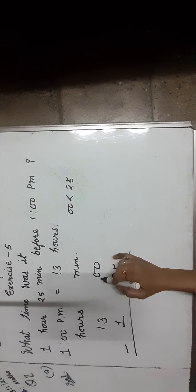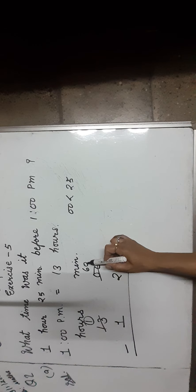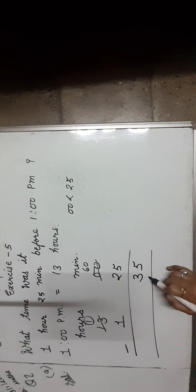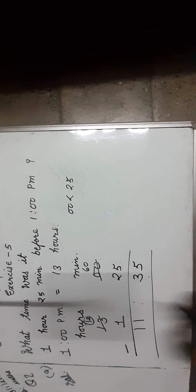0 minus 25. As you can see, 0 is smaller than 25. So we have to borrow 1 hour to make it 60 minutes. As we know, 1 hour is equal to 60 minutes. Now subtract 25 from 60 minutes, which is equal to 35 minutes. We write 35 under the minutes column. Then subtract hours: 13 becomes 12. Now 12 minus 1 is equal to 11. Thus, the required time is 11:35 hours or 11:35 am.